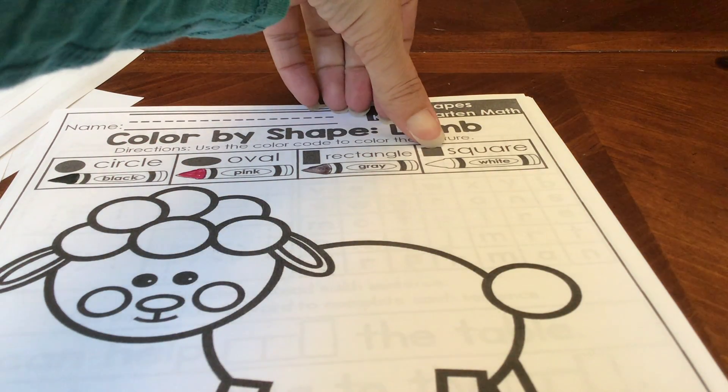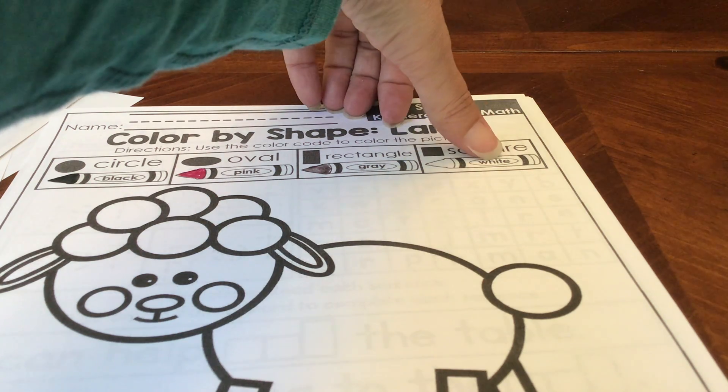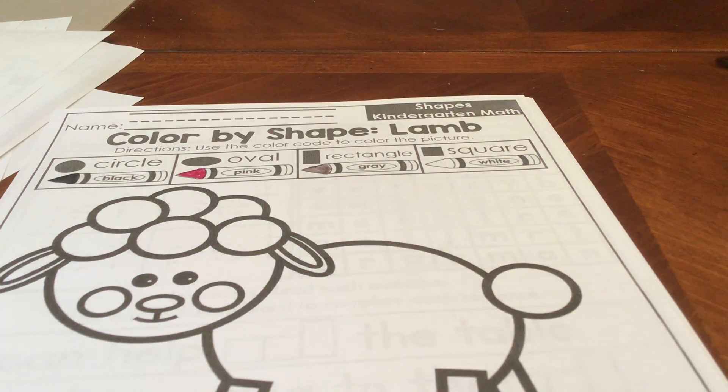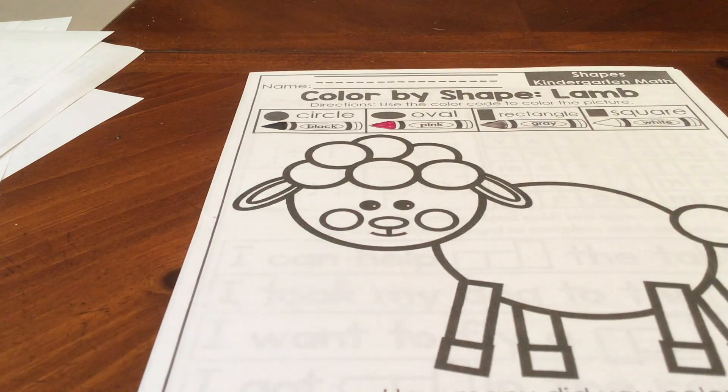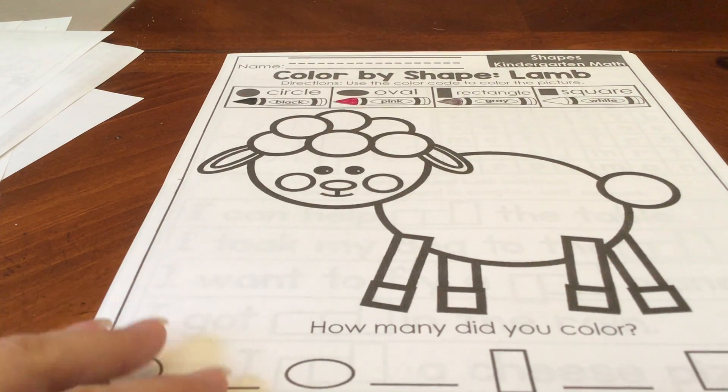And our last shape is a square. Four sides that are all the same. It says to color it white. I can't color it white. My paper's already white and I don't have a white marker. So we'll just have to skip that part, I guess. Or you could pick a different color to use if you want to.